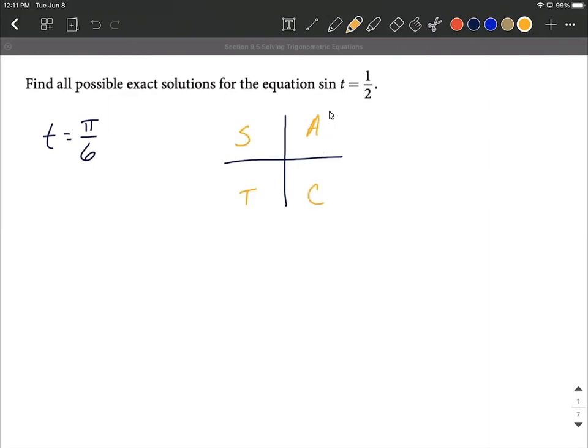This phrase reminds us that all of our trigonometric ratios are positive in the first quadrant. Sine will be positive in the second quadrant, tangent in the third, and cosine will be positive in the fourth quadrant.